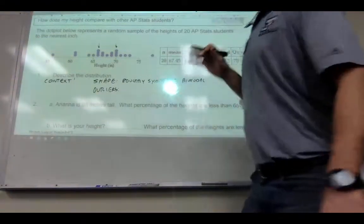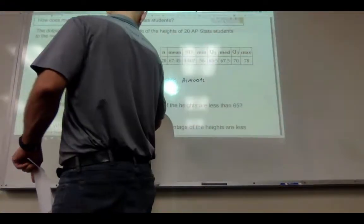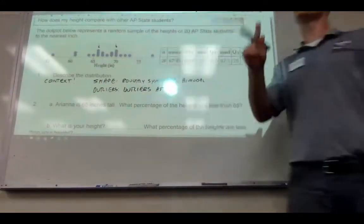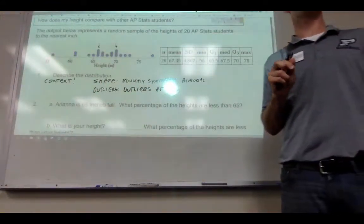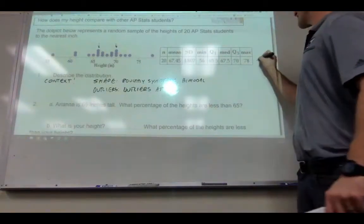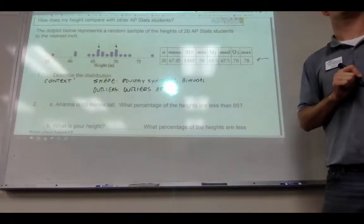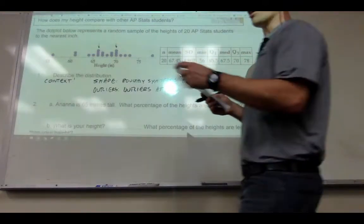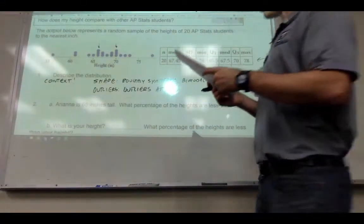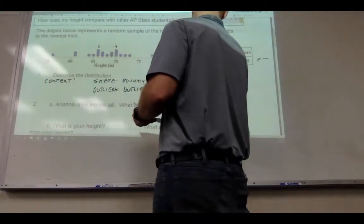For our outliers, you can calculate this. So you should have noted there are outliers. Two things can happen here. You could say there appear to be outliers. But if they give you the data, you should say it. So is our answer going to be two potential or two outliers? It's not potential if you have the data to back it up.